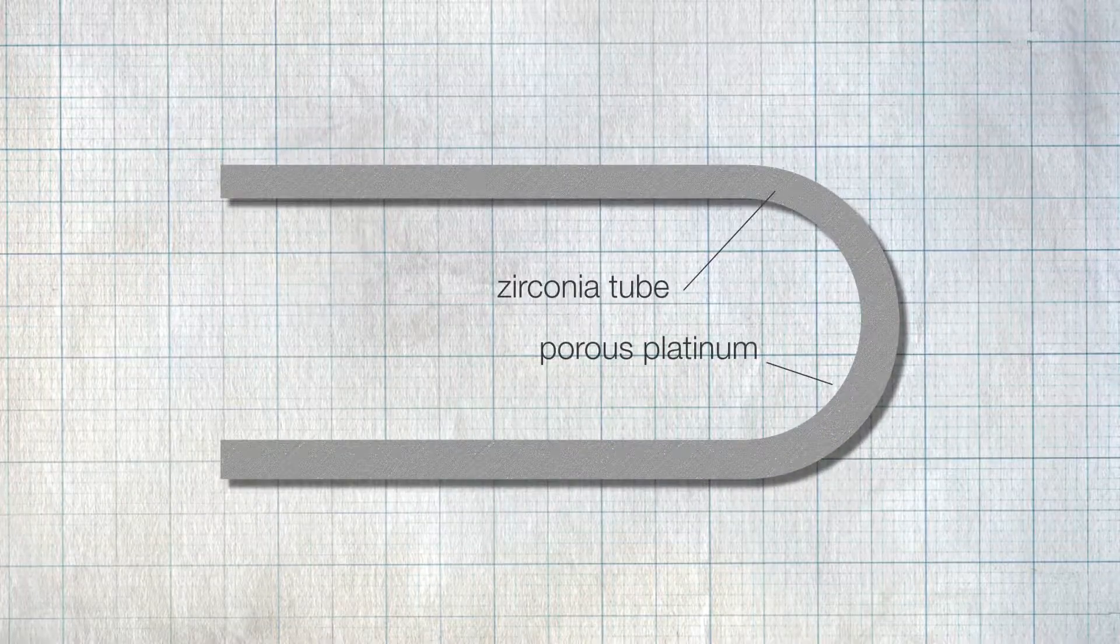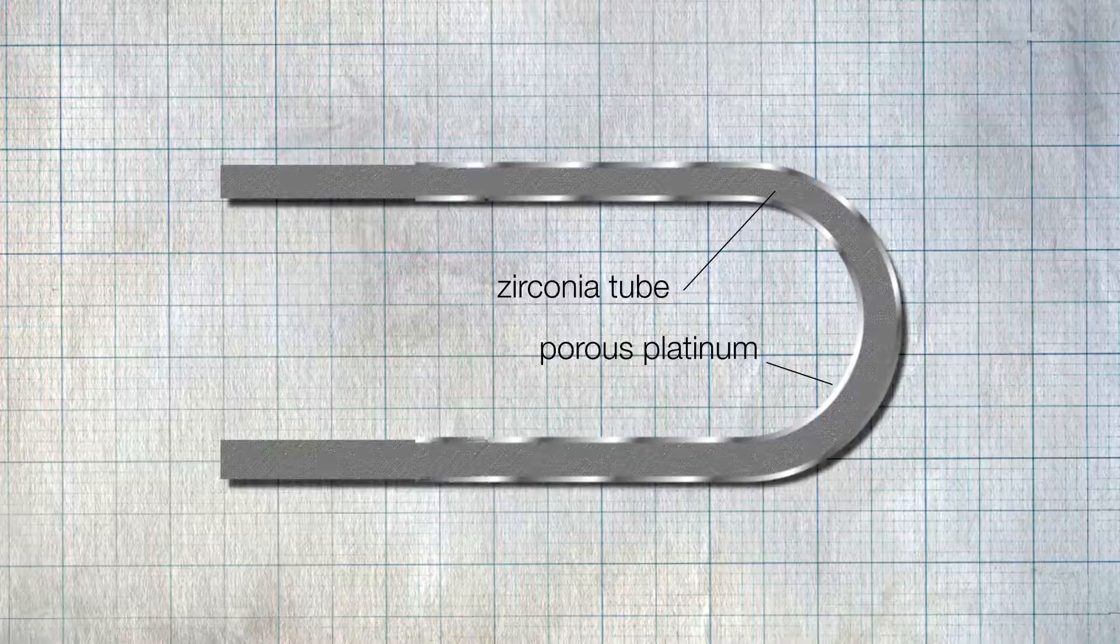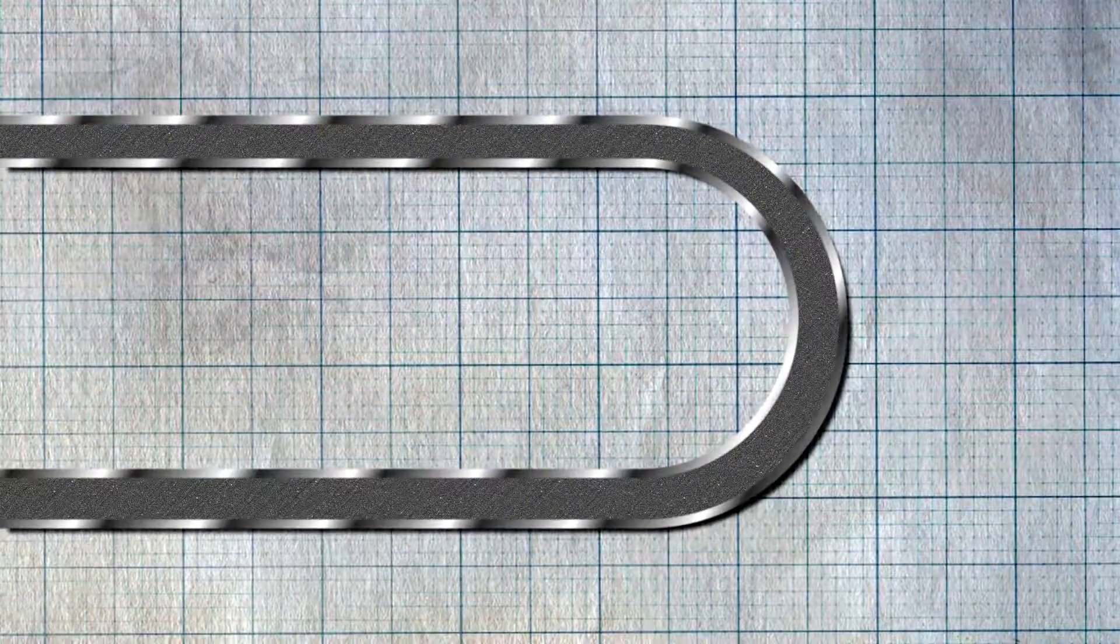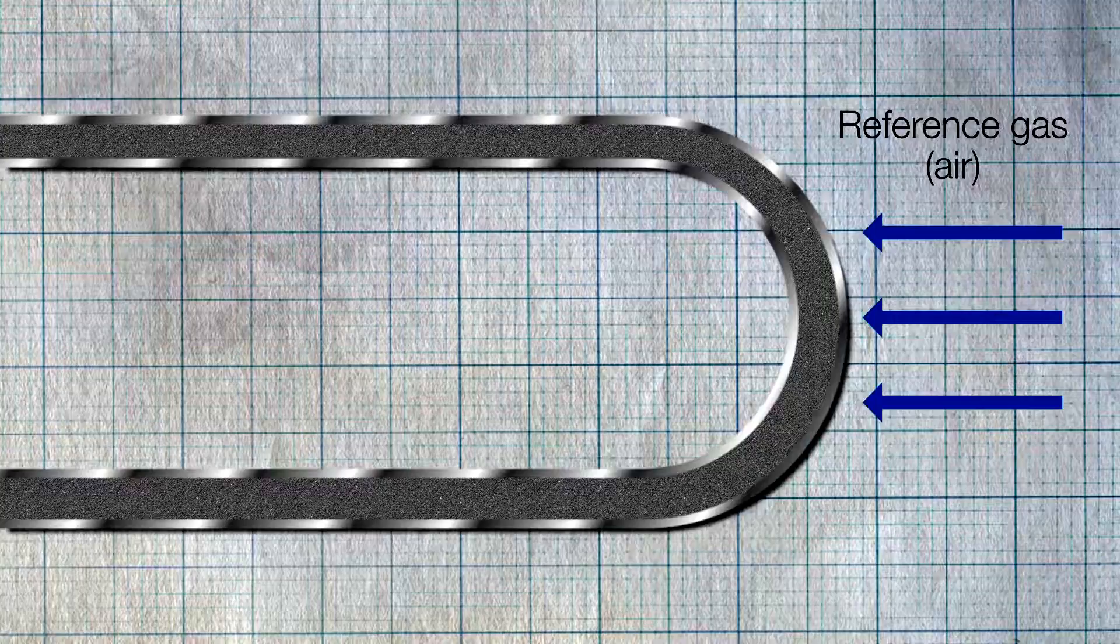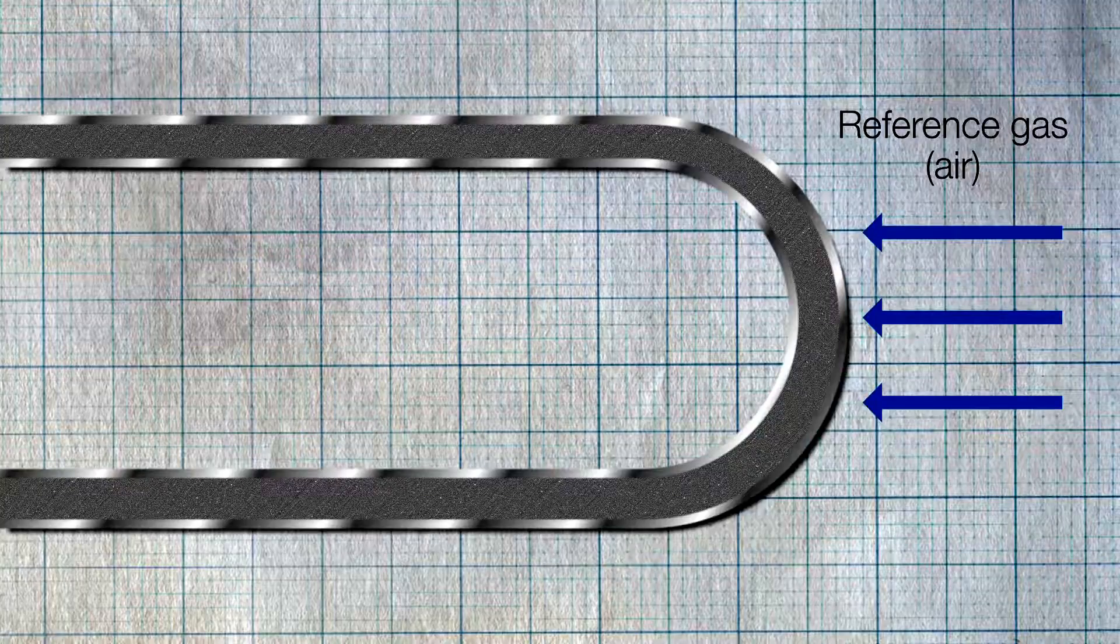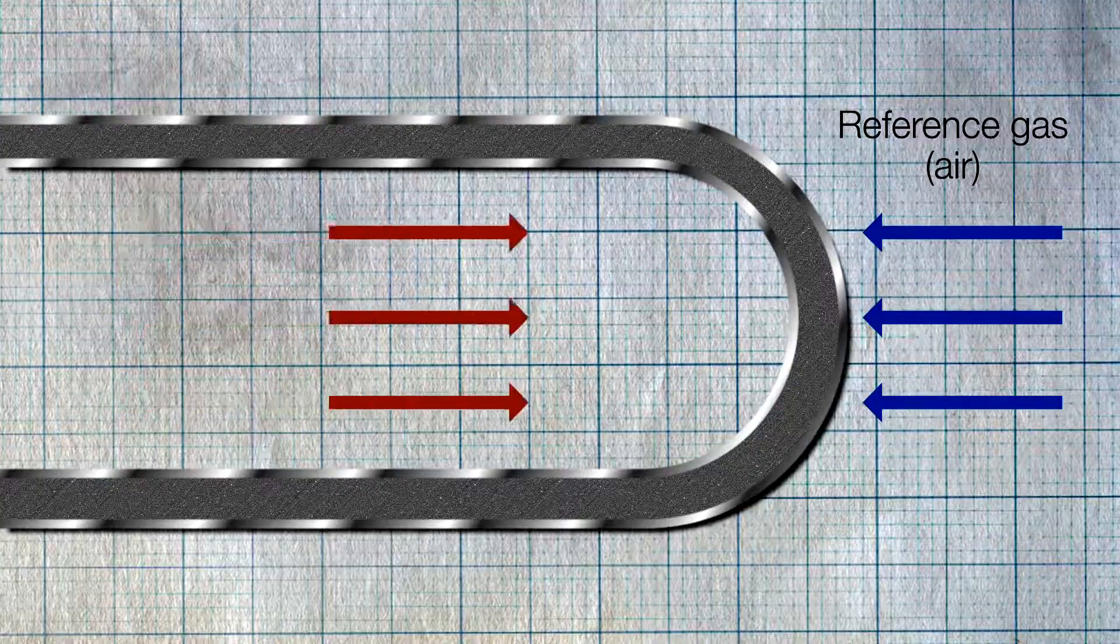The sensor consists of a thin piece of zirconium material. A supply of air is applied to one face of the sensor as a reference gas. The process gas being measured is applied on the opposite face.